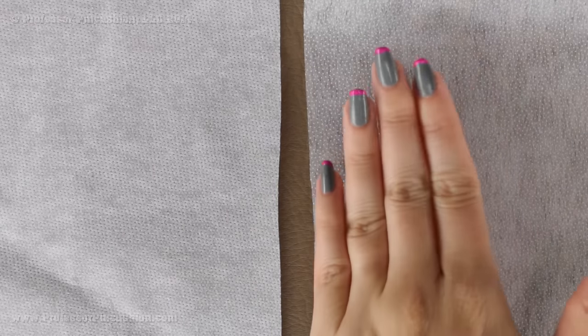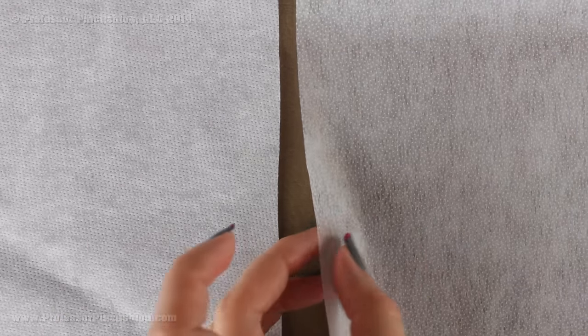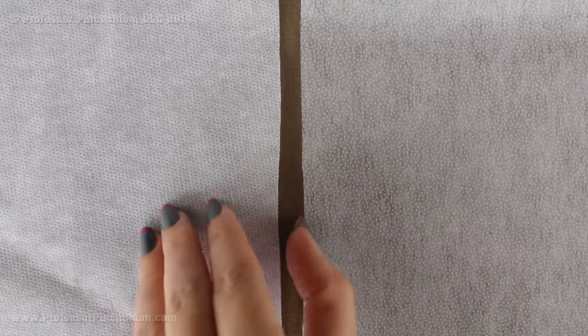Interfacing comes in different weights such as lightweight, mid weight and heavy weight. You can see a couple of examples here, I have lightweight and this is actually a heavy weight. For this one you can see that it is a lot thinner because we're only getting a little bit of support, while this one is a lot heavier which would be ideal for maybe a cuff. Now you're choosing depending on either the weight of your fabric or on the project.